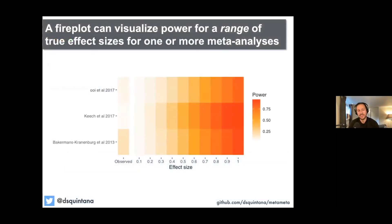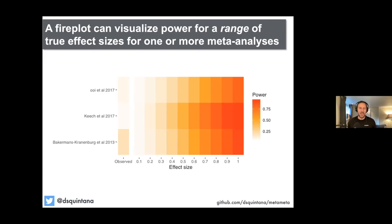You can visualize this for one or more meta-analyses. What we're seeing here is three different meta-analyses — the Uy et al., Keech, and Bakermans-Kranenberg — and for each of these the package visualizes the median power for every study included. So at a glance you can actually see, for a given research field with say 10 meta-analyses, for all the studies included in those meta-analyses, what is the statistical power assuming a range of effect sizes?